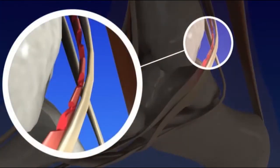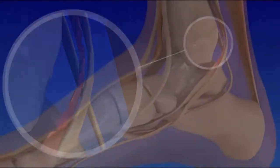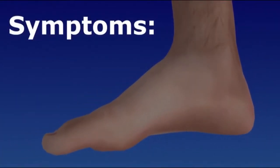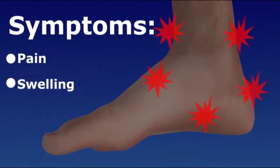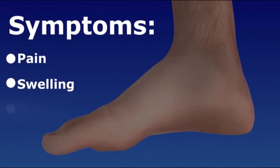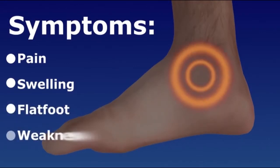The tendon may become inflamed or torn as a result of sports injury, obesity, or certain medical conditions. Problems with this tendon are more common in women. Posterior tibial tendon dysfunction can cause pain and swelling at the inside of the ankle, a reduced arch and flat foot, weakness, and the inability to stand on the toes.